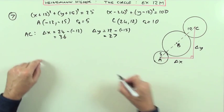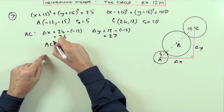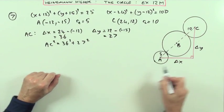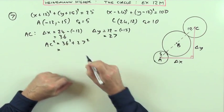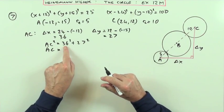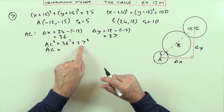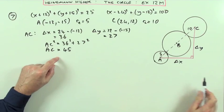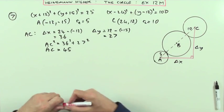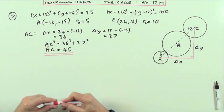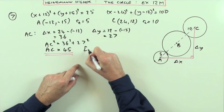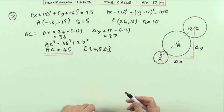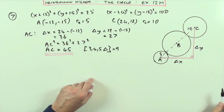That means AC squared equals 36 squared plus 27 squared. You can recognise this quickly: 36 is 9 times 4 and 27 is 9 times 3, so AC is 9 times 5, which is 45. This is a scaled 3-4-5 triangle — specifically nine times a 3-4-5 triangle — so AC = 45.